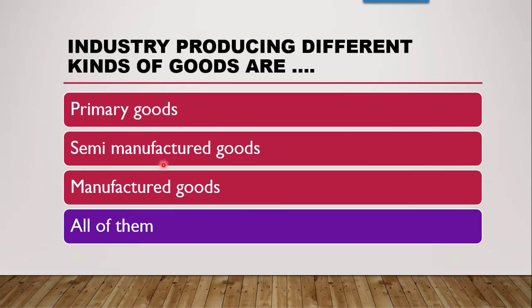Semi-manufactured goods include semi-processed material. For example, in the pharmaceutical industry, a simple example is manufacturing of capsule shells — when the filling is done, they are converted into complete finished goods. Manufactured goods include sugar from sugar cane, cloth from cotton, paper from raw material, various machineries, capsules, tablets, and household items like TV, fridge, and washing machine. So all these goods can be produced by industry, and the correct answer is all of them.